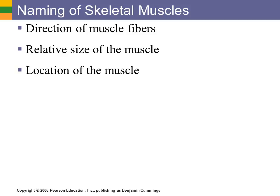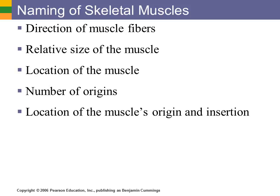Many muscles are named by their location — specifically named for the bones they lay on. For example, the temporalis muscle lies over the temporal bone. Some muscles are identified by the number of origins. An origin is the point at which the muscle has very little movement — it's the stationary point, or more precisely the less movable point than the insertion. The insertion is the main part that moves. The biceps has two heads, so two origins; the triceps has three heads, three points of origin. Some complicated names describe both origin and insertion, like the sternocleidomastoid muscle, which attaches to the sternum, the mastoid process, and the clavicle.